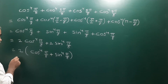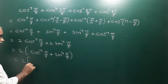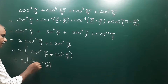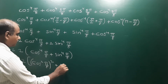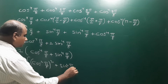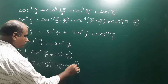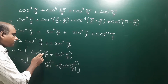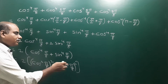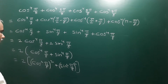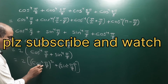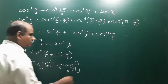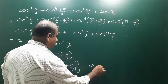Now cos⁴(π/8) + sin⁴(π/8) can be written as [cos²(π/8)]² + [sin²(π/8)]². Let A = cos²(π/8) and B = sin²(π/8), so this is in the form A² + B². Using the identity A² + B² = (A + B)² - 2AB, we apply this formula.